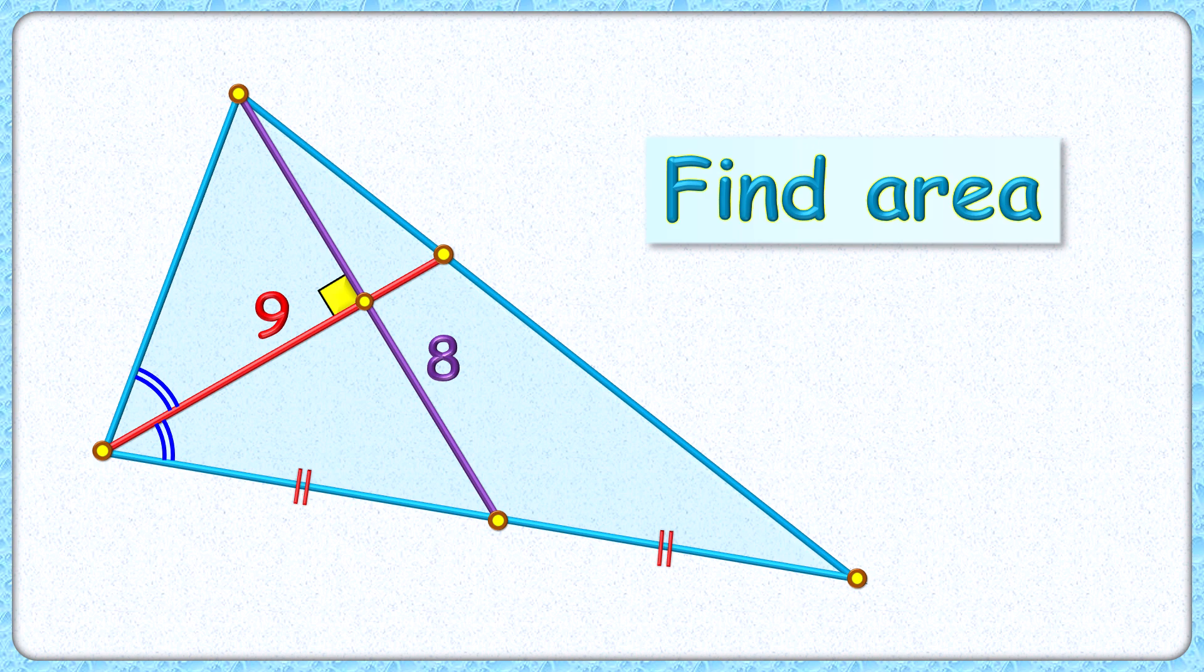Welcome everyone. This interesting question given to us is a triangle with length of median as 8 cm and length of angular bisector as 9 cm, and these two lines are perpendicular to each other. The exciting part is, with this limited data, we have to find the area of this full triangle.